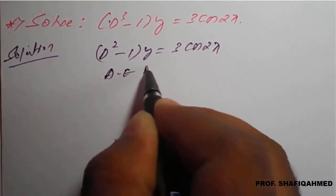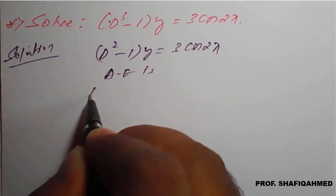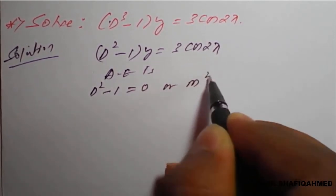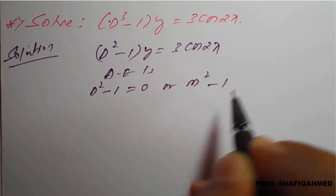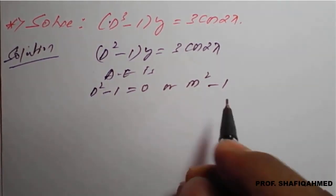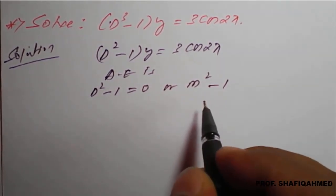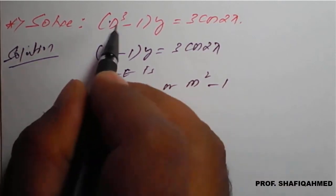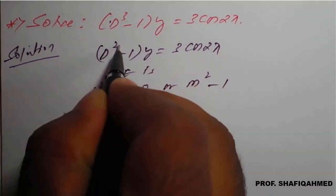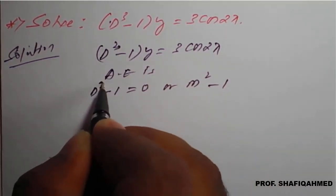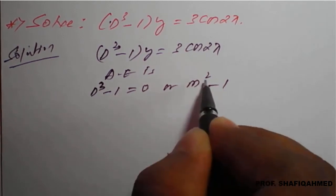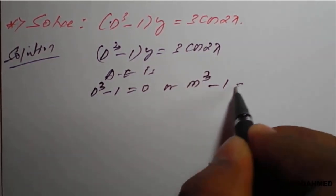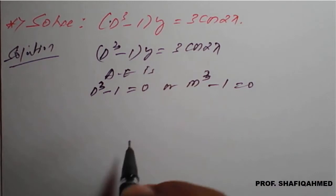The auxiliary equation is d² - 1 = 0, or I can write it as m² - 1. Actually, this is m cube, so here also m cube will come: m³ - 1 = 0.